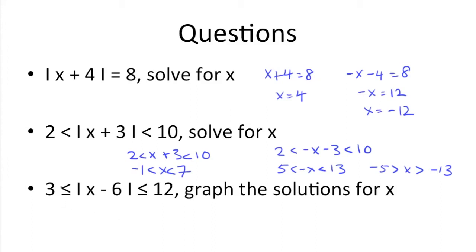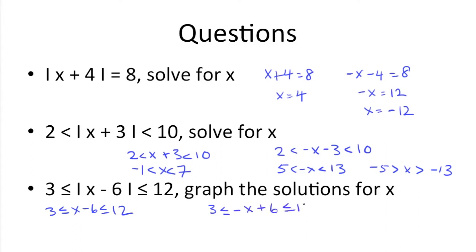Next we have 3 is less than or equal to the absolute value of x minus 6, which is less than or equal to 12. Graph the solutions for x. So like in the previous question, we need to first remove the absolute value signs. Then also run a negative through it, so we have negative x plus 6 is less than or equal to 12. Now solve for x.